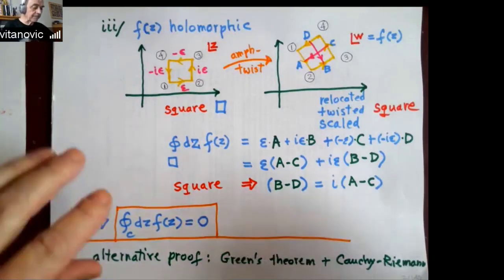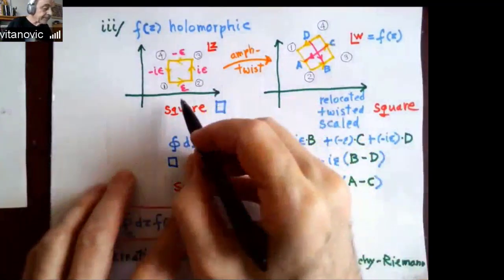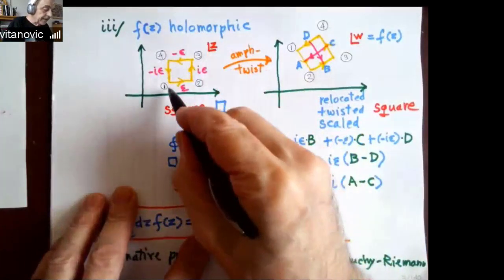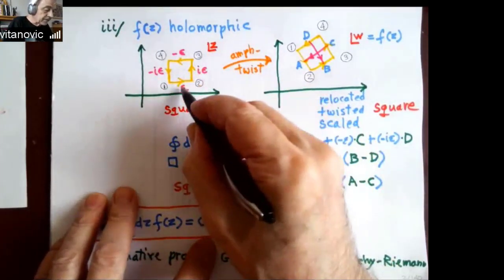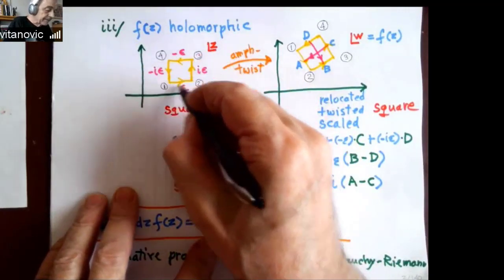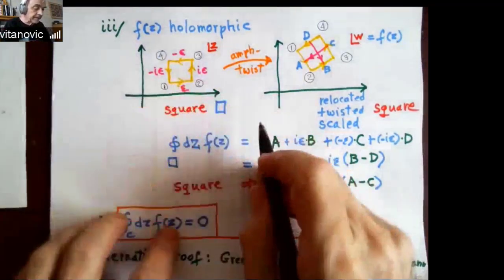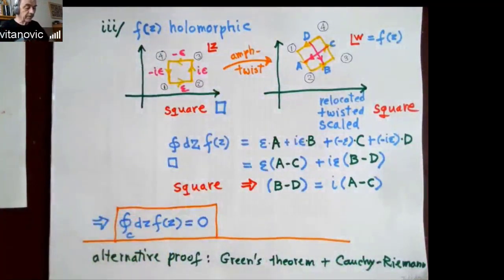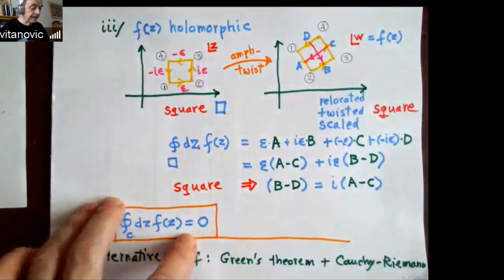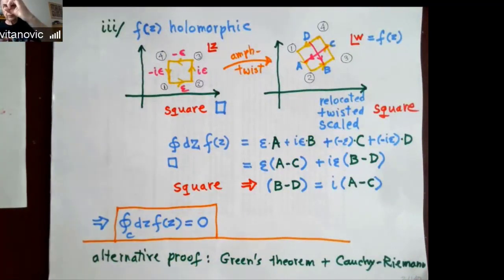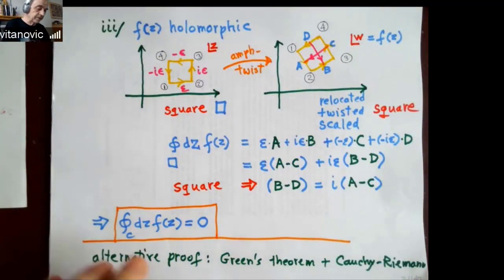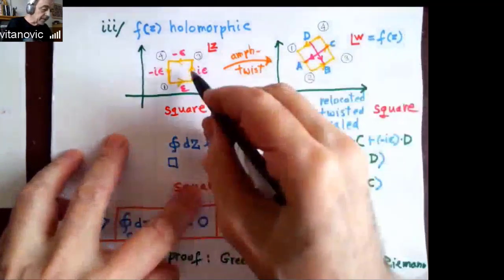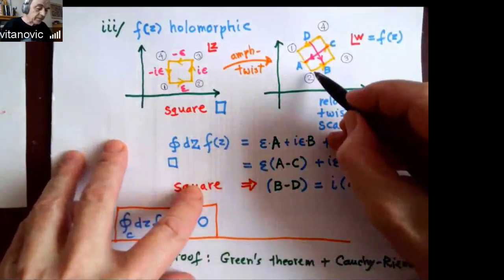We know the following thing from what we did last week. If you run around a little square in the z-plane — so it has four corners, the sides are epsilon, i·epsilon, minus epsilon, and minus i·epsilon, because it's a directed interval — the holomorphic mapping of a function into the function plane doesn't change small shapes. It rotates them and rescales them — we call that amp-twist. So what we see in the image of a small square will be a small square.